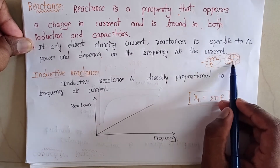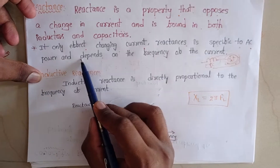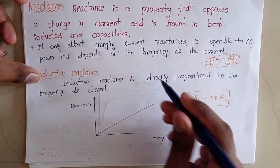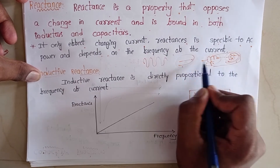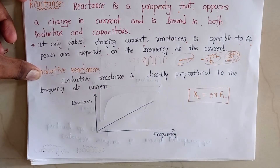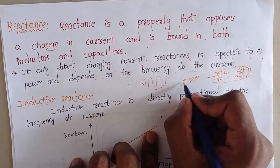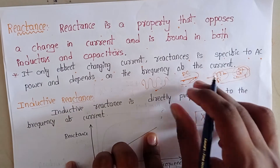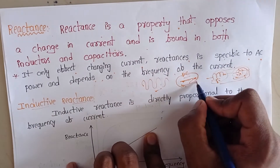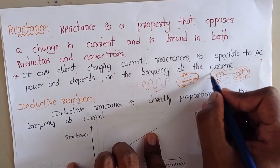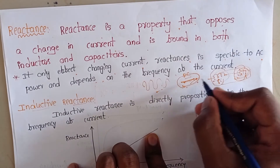Reactance is only present in inductors and capacitors, and it only affects changing current. Reactance is specific to AC power and depends on the frequency of the current. If we apply DC current to the inductor and capacitor, there are no fluctuations, so there is no change in inductance and capacitance values — there is no reactance. If we apply direct current, then reactance is equal to zero. Remember that point.